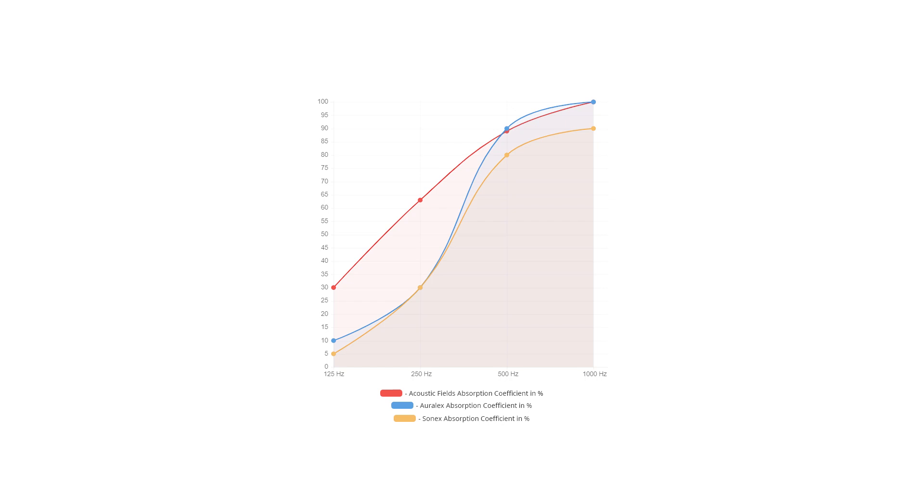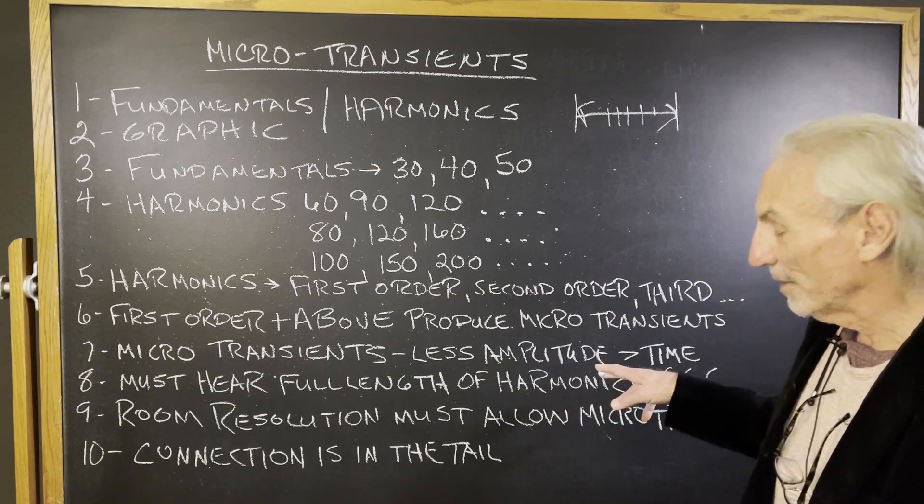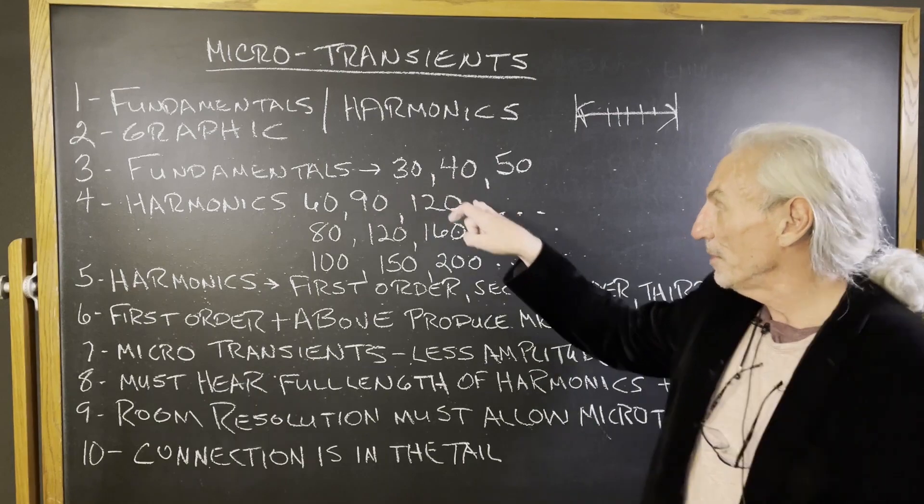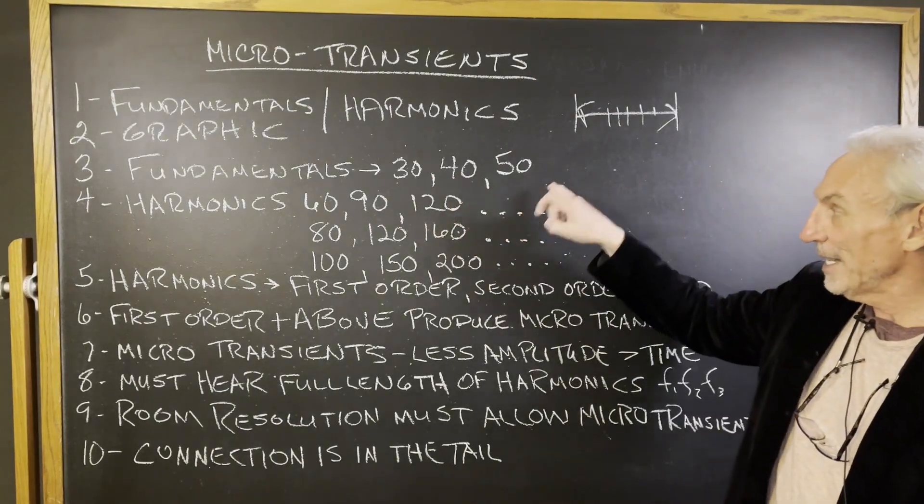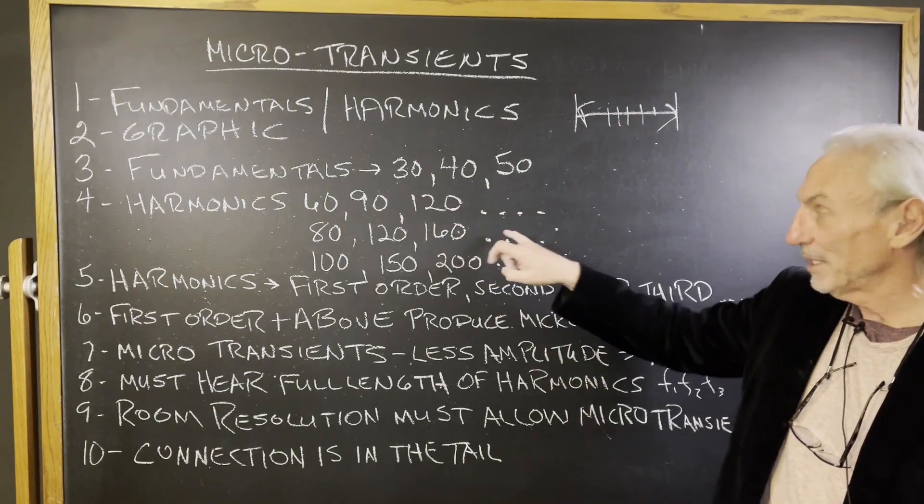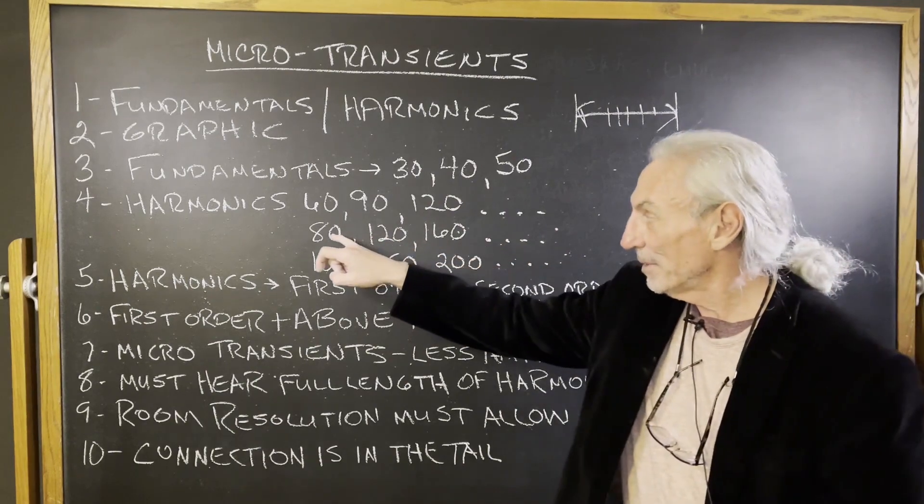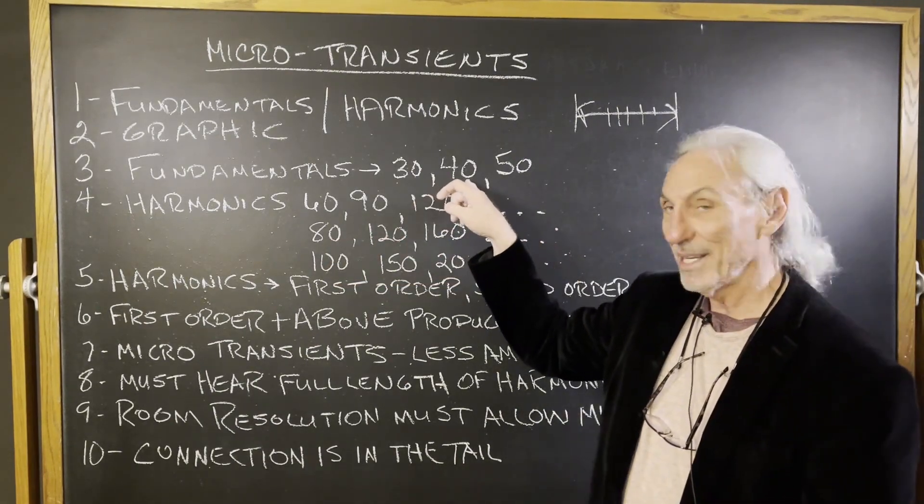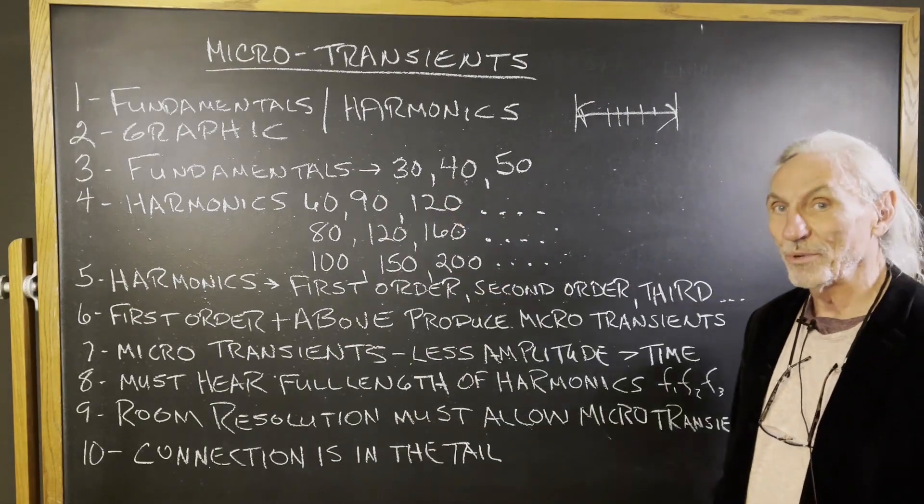So we must hear the full length of the harmonics. So we got the 30, let's use 40, 40 strikes. And then we've got 80, 120, 160, 200. We got to be able to hear the 80, the 120, 160, and the 200 with the same resolution we heard the 40.